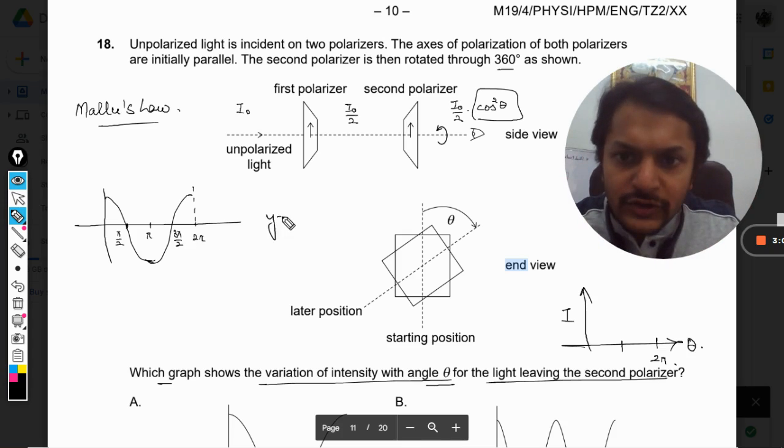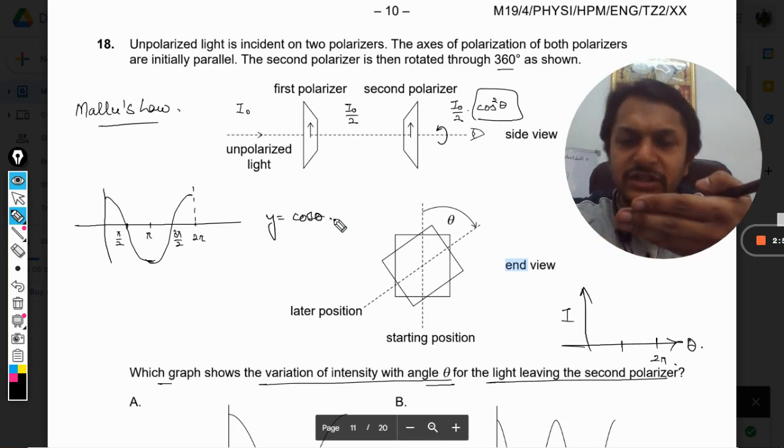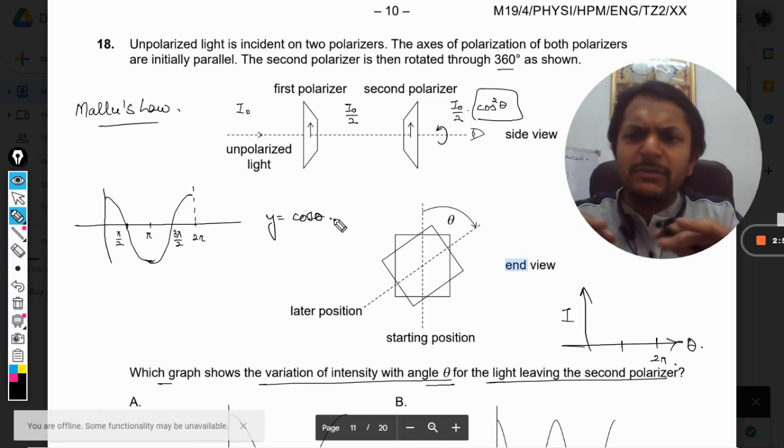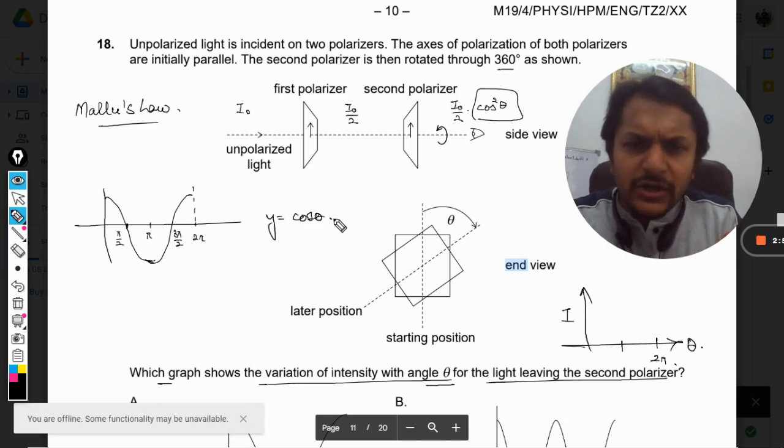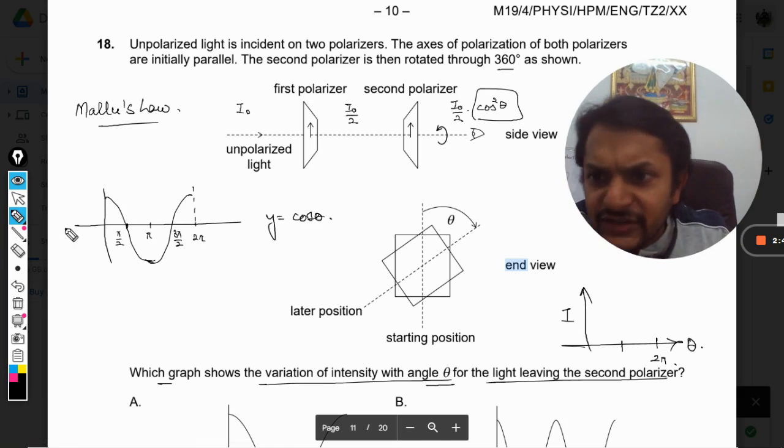Now when you square it, what happens is the negative value becomes positive and the other values become a little more sharper in their appearance, but there is no big difference. So the new graph will look somewhat like this.